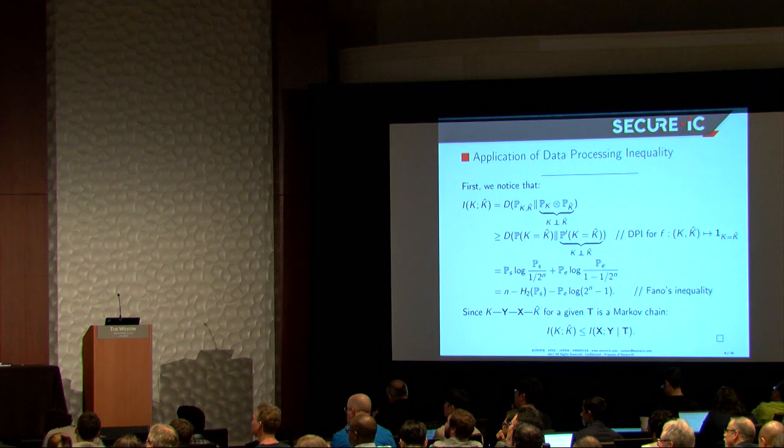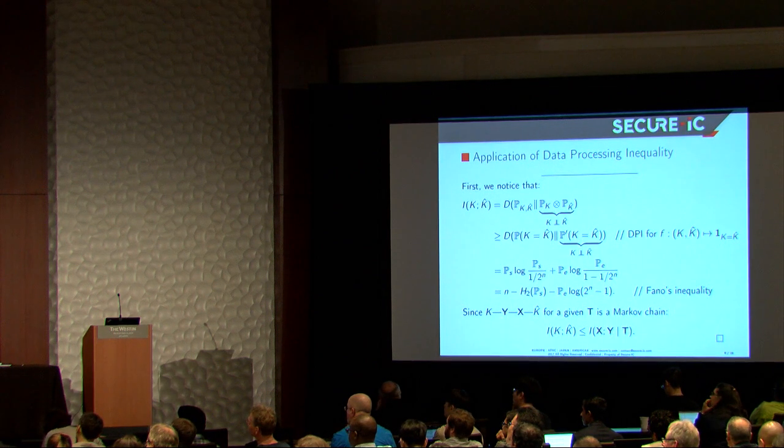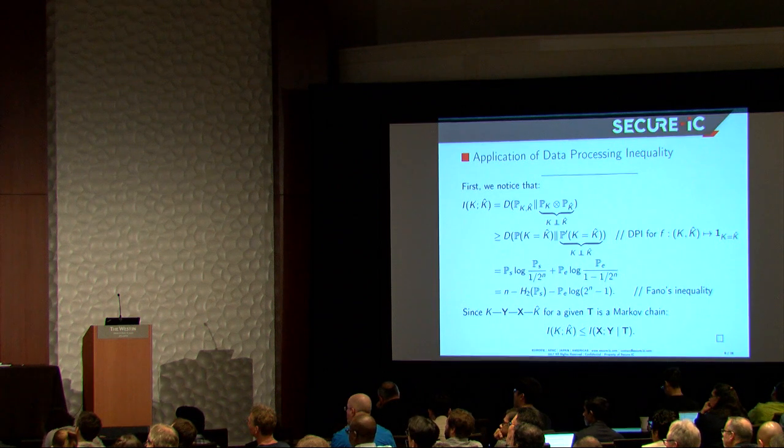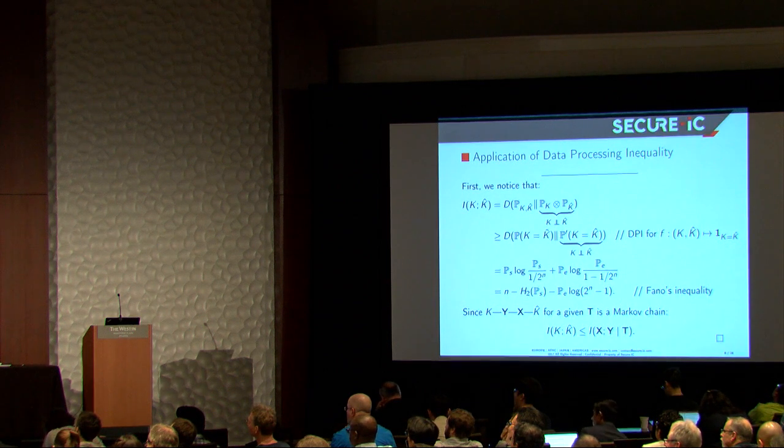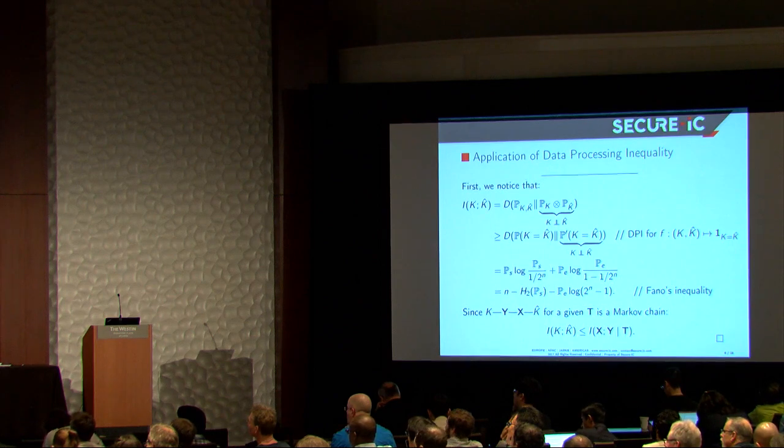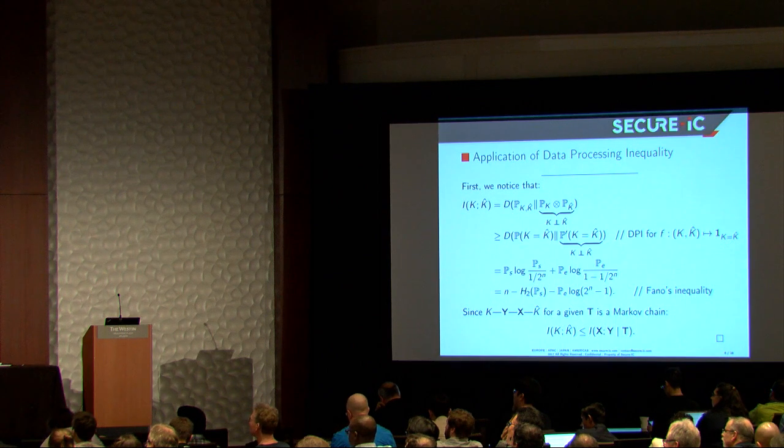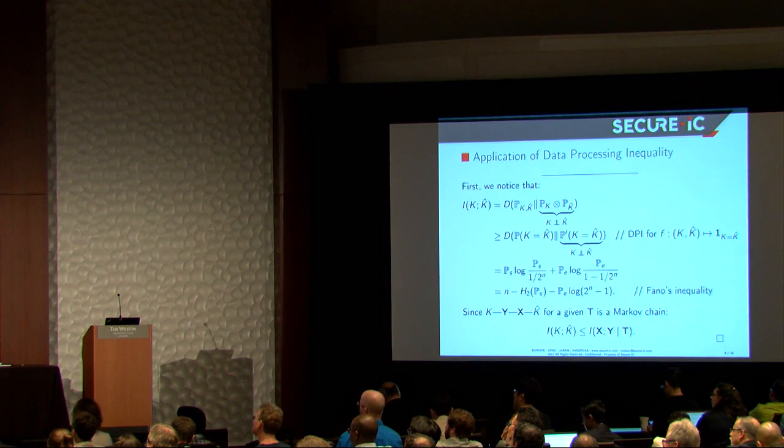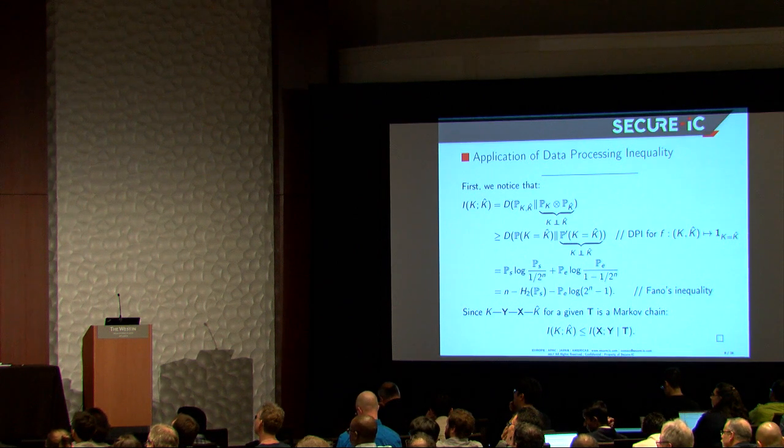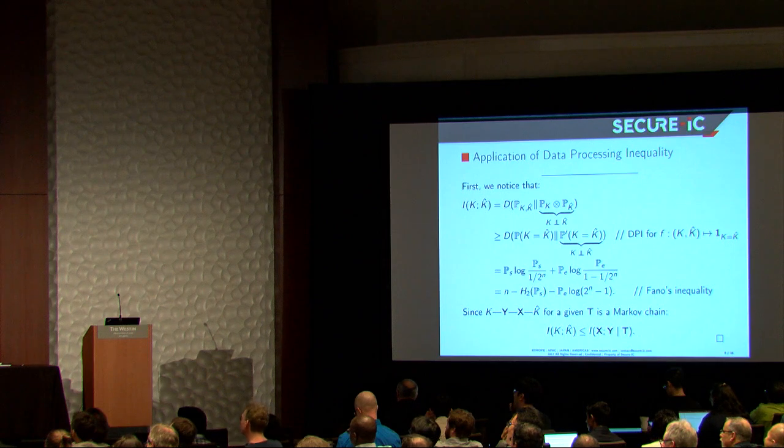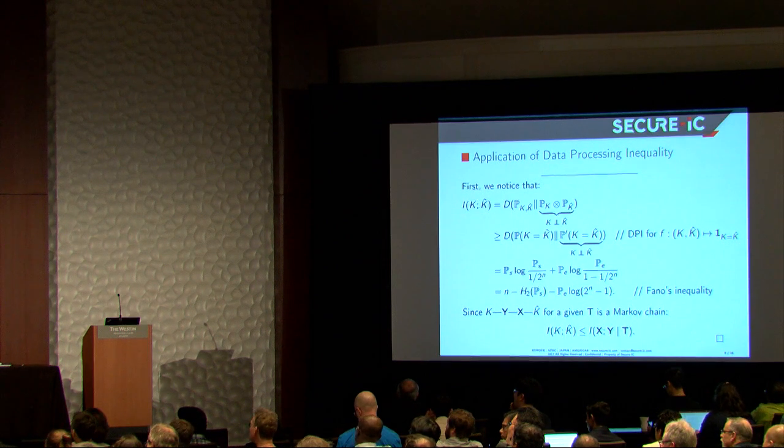So it states that if we have a random variable which is processed to give B, then C and D, etc., we lose information while we process. For instance, the mutual information between the inner variables B and C is more than between A and D. Same for kind of relationship for the divergence, when actually we process in the same way the two laws here. So we can notice a few things. For instance, if we are interested into the mutual information between the real key and the guest key, it's a divergence, like I mentioned. And now we will apply on those variables this function.